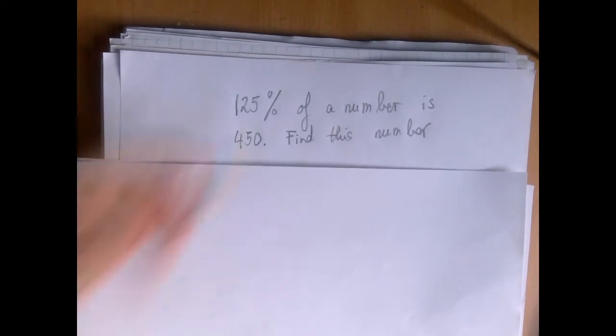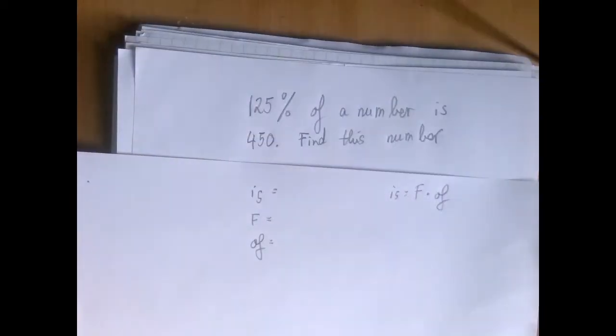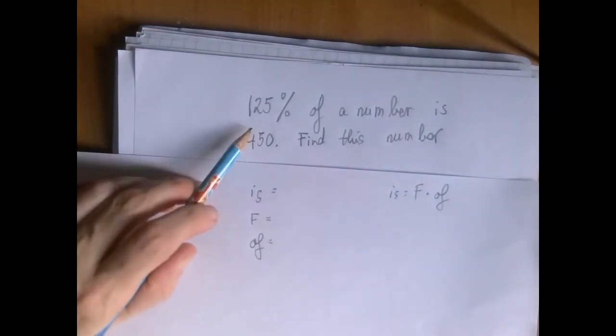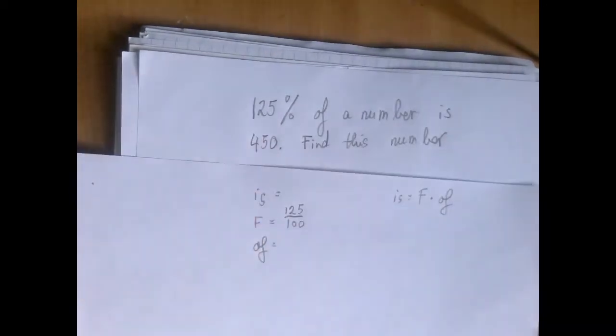So in our little table, it's always is, is fraction times of, and in this particular case, 125% is the fraction. It's the same as 125 over 100.